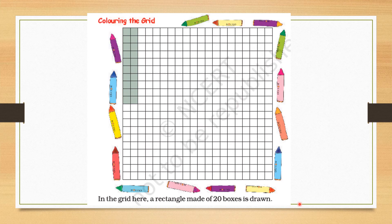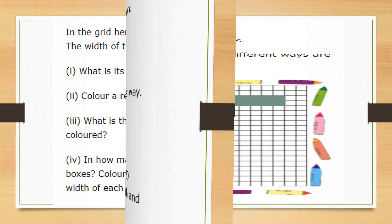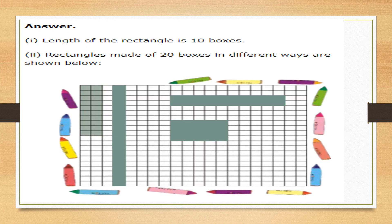The width of this rectangle is 2 boxes as given in the diagram. The first question: what is its length? The length of the rectangle is 10 boxes. This gives you the base, which you have done in the chapter 'How Many Squares.' If you count: 1, 2, 3, 4, 5, 6, 7, 8, 9, and 10 — that is the length. We are not talking about the breadth.